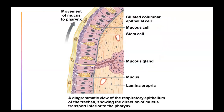Up close you can see ciliated columnar epithelium. These cilia act in wave-like rhythmic motions to move mucus created by goblet cells up toward the pharynx. When you cough, clear your throat, or sneeze, that helps bring mucus up into the pharynx to be swallowed or expelled.